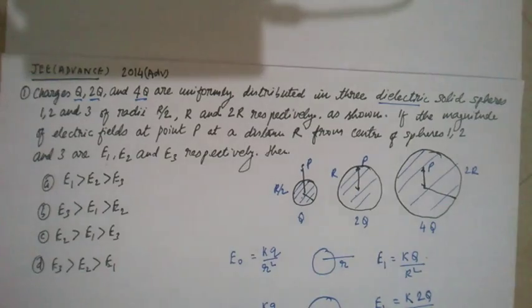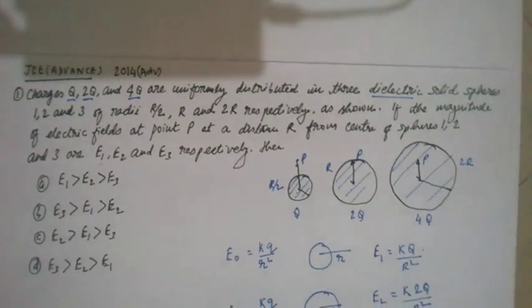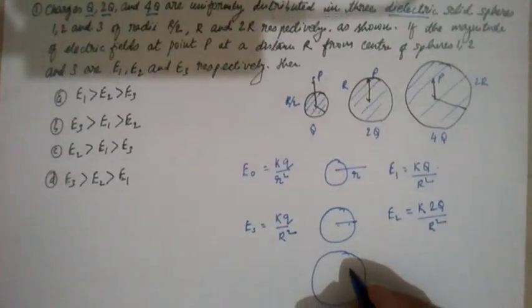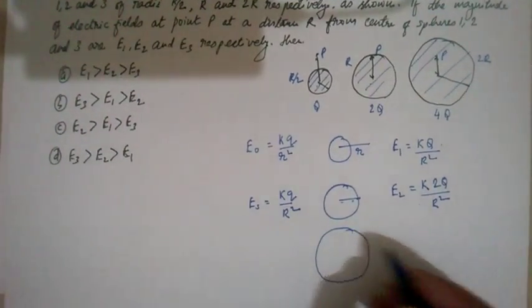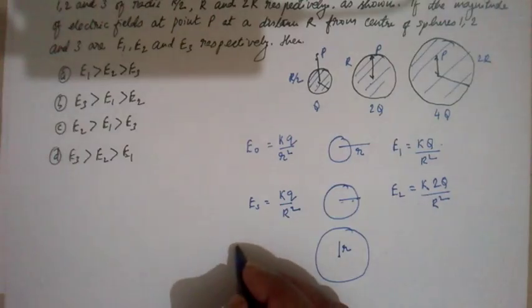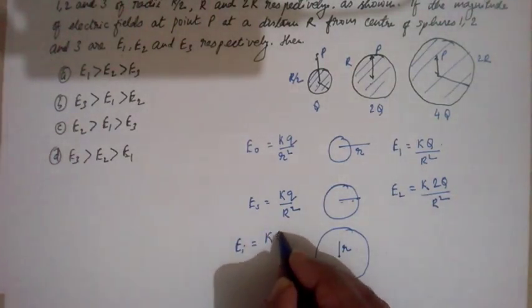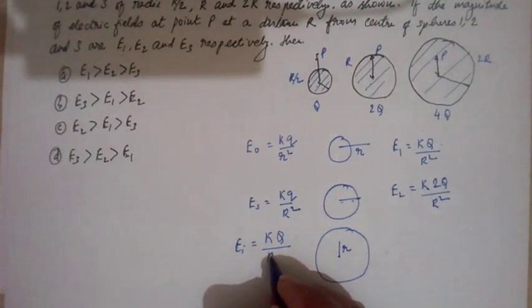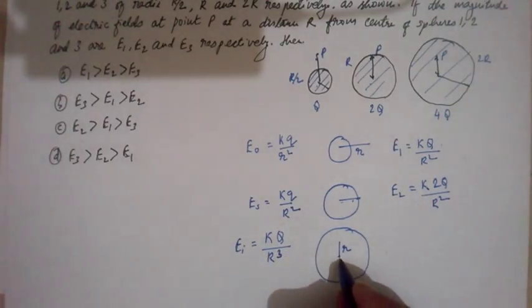The third case is inside the solid sphere. In the third case we have to find it inside the solid sphere. Inside the solid sphere the formula is KQ/r³, where r is the radius of the sphere.